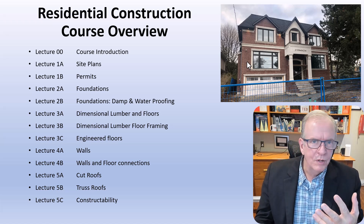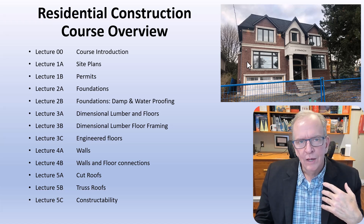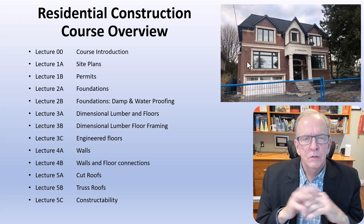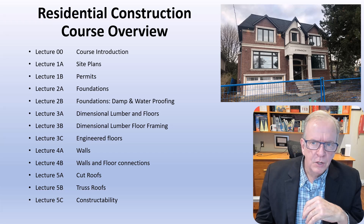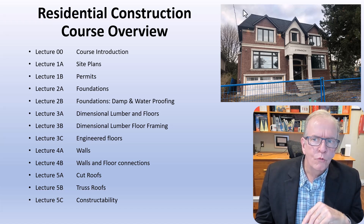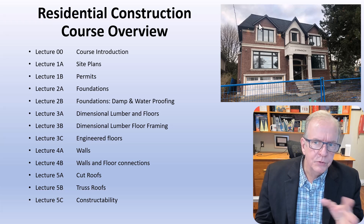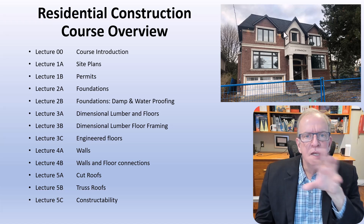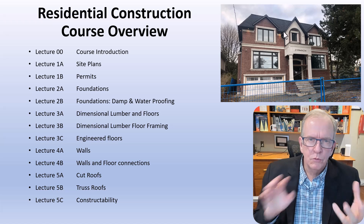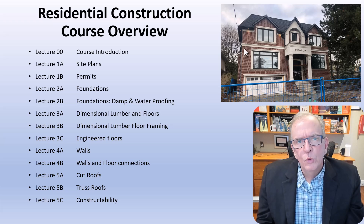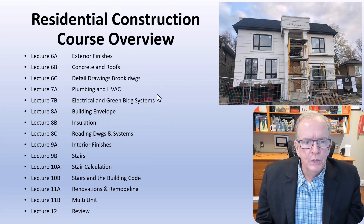We look at brick veneer, wood frame with siding, and EIFS — exterior insulated finish stucco systems — and combinations of all of the above. This particular house has a mansard roof, and there are zoning requirements that restrict the overall height of the house. The builder designed in a mansard that incorporates a roof system without taking away from the visual look of the house. We also discuss the logic behind why builders do things and how to coordinate with trades.